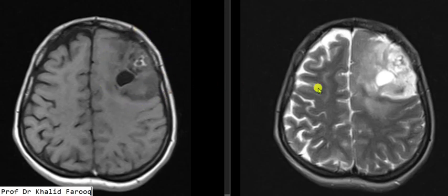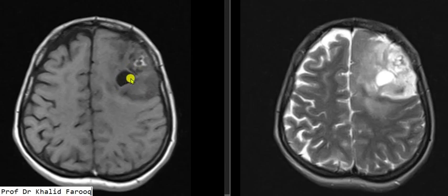Both on T1 and T2 weighted sequences, we have an irregular high signal intensity area on T1 weighted image suggesting a hemorrhagic component. We can also see low signal intensity areas favoring necrotic foci. This is basically a mass lesion.